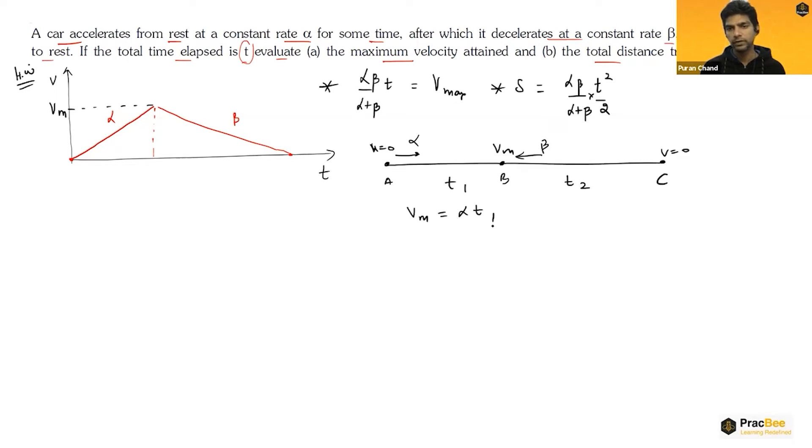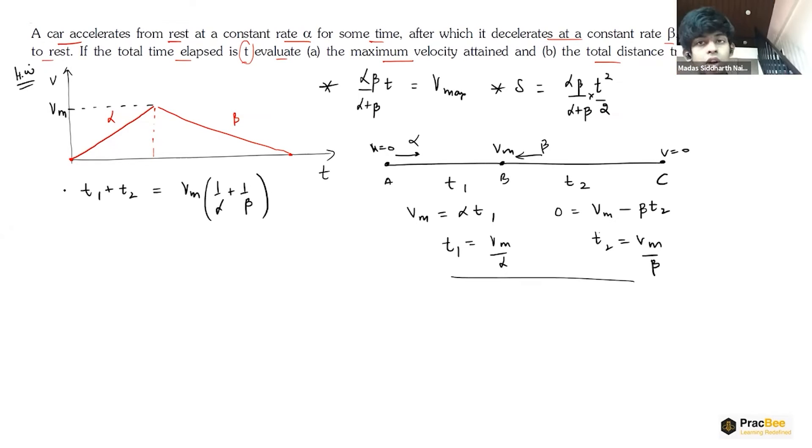If we apply equation of motion between A and B, we can say vm will be alpha t1, because u is zero. And from B to C, your final velocity is zero, initial velocity is vm, so zero equals vm minus beta t2. Now we have two equations. From this we can calculate t1 as vm by alpha, t2 as vm by beta. We know the sum of the times: t1 plus t2 equals t.